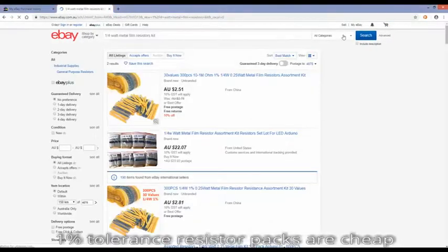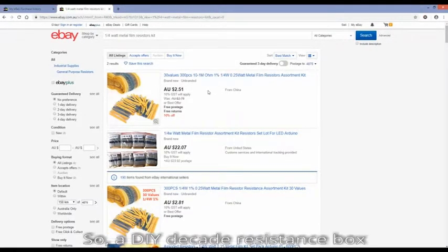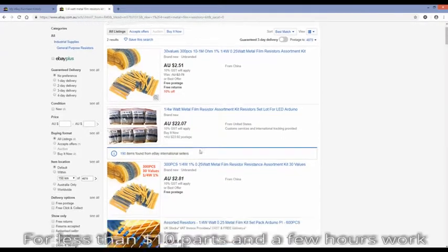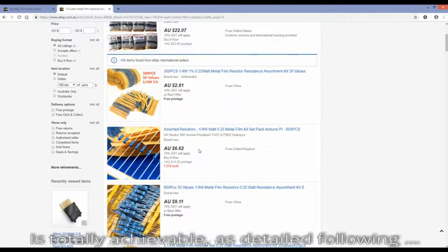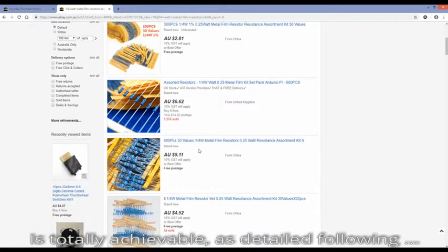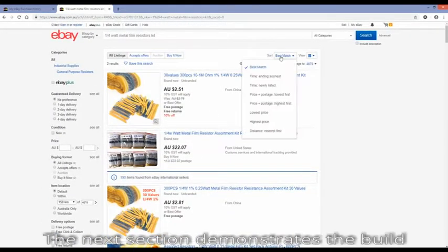1% tolerance resistor packs are cheap, so a DIY decade resistance box for less than $10 in parts and a few hours work is totally achievable, as I'll detail in the following.